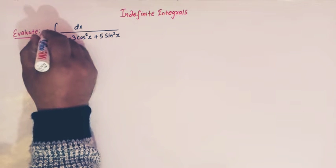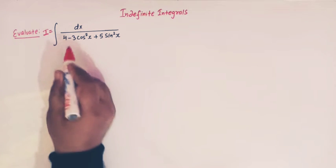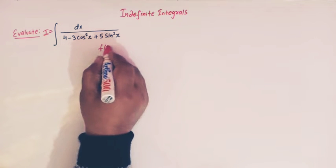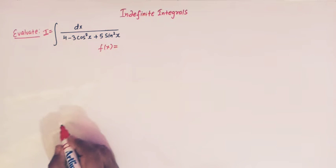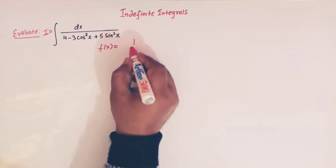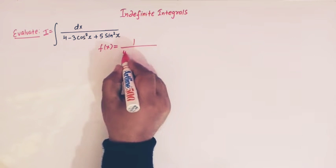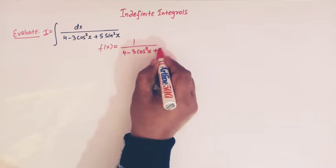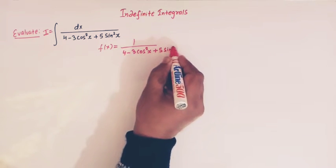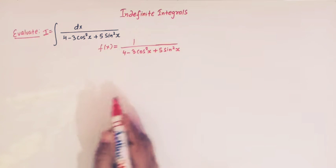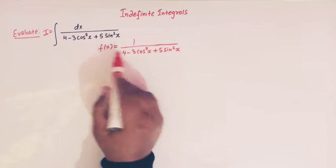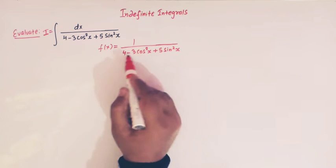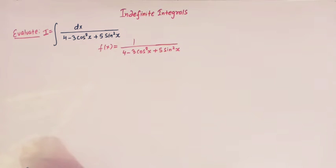Let us first call this integral as I. Our integrand f(x) is 1 over 4 minus 3 cos squared x plus 5 sin squared x, and we see that this integrand is a function of sin squared x and cos squared x in the denominator.